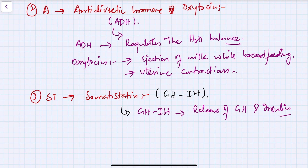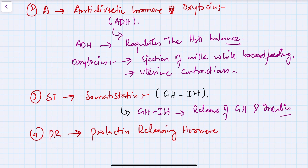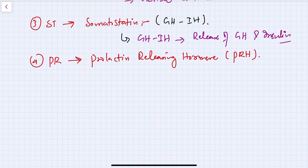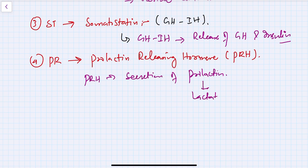PR in the mnemonic stands for prolactin releasing hormone, PRH. This hormone stimulates the secretion of prolactin, which is essential for lactation — so that milk gets released or secreted from the breasts while breastfeeding.